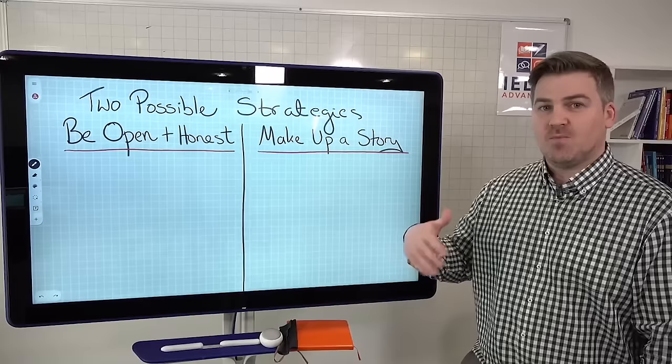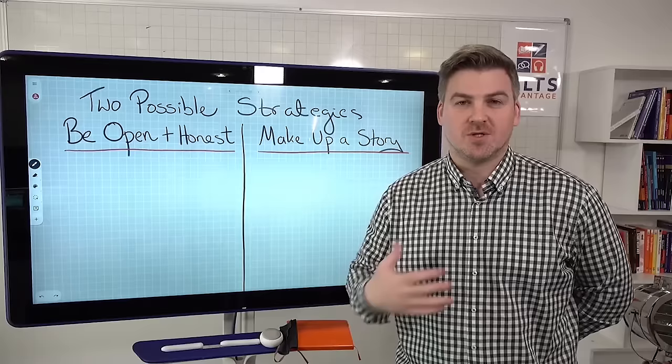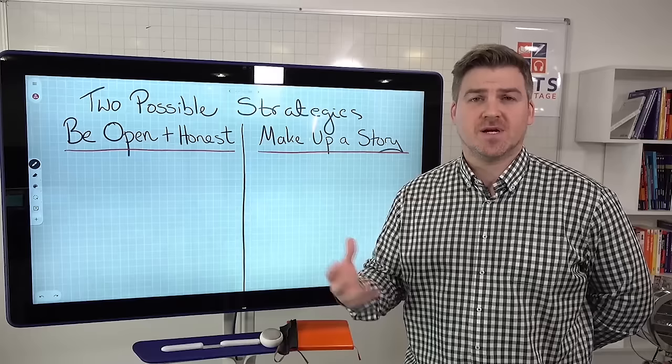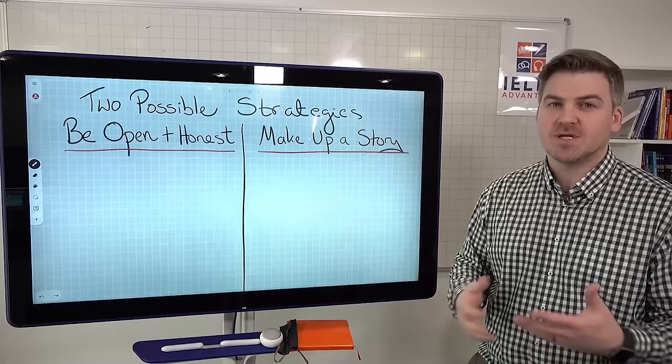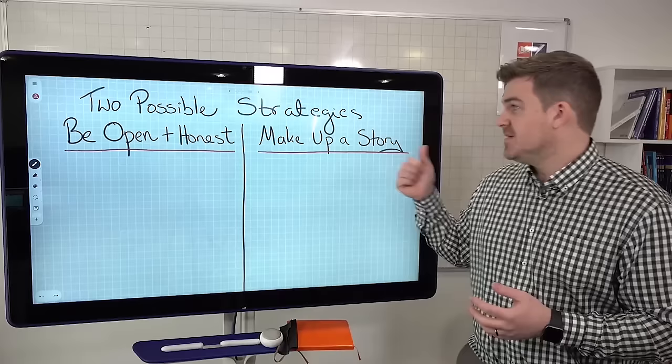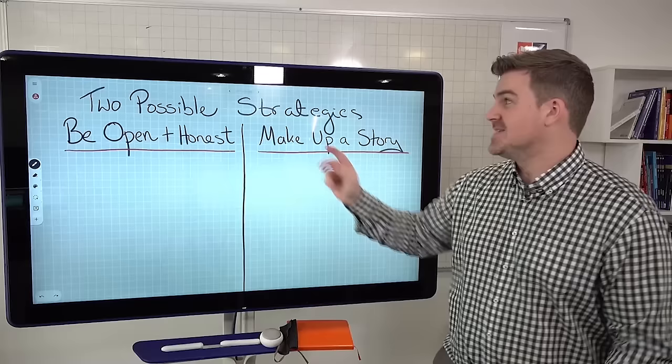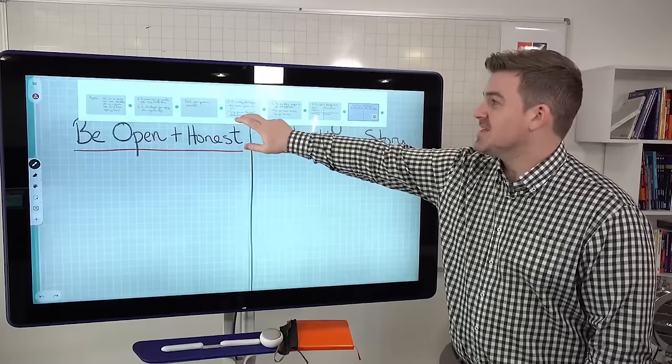What I would recommend doing is try and find some questions or you could do this with a partner. Try and find some questions on topics that you're not very comfortable using or not very comfortable talking about. Try being open and honest and just saying I don't know anything about that and developing it, or try making up a story and see which one you feel most comfortable with. It's always best to tell the truth. Just use this as a last resort. But as I already mentioned, it's for these reasons it's actually very unlikely to happen. So don't worry too much about it.